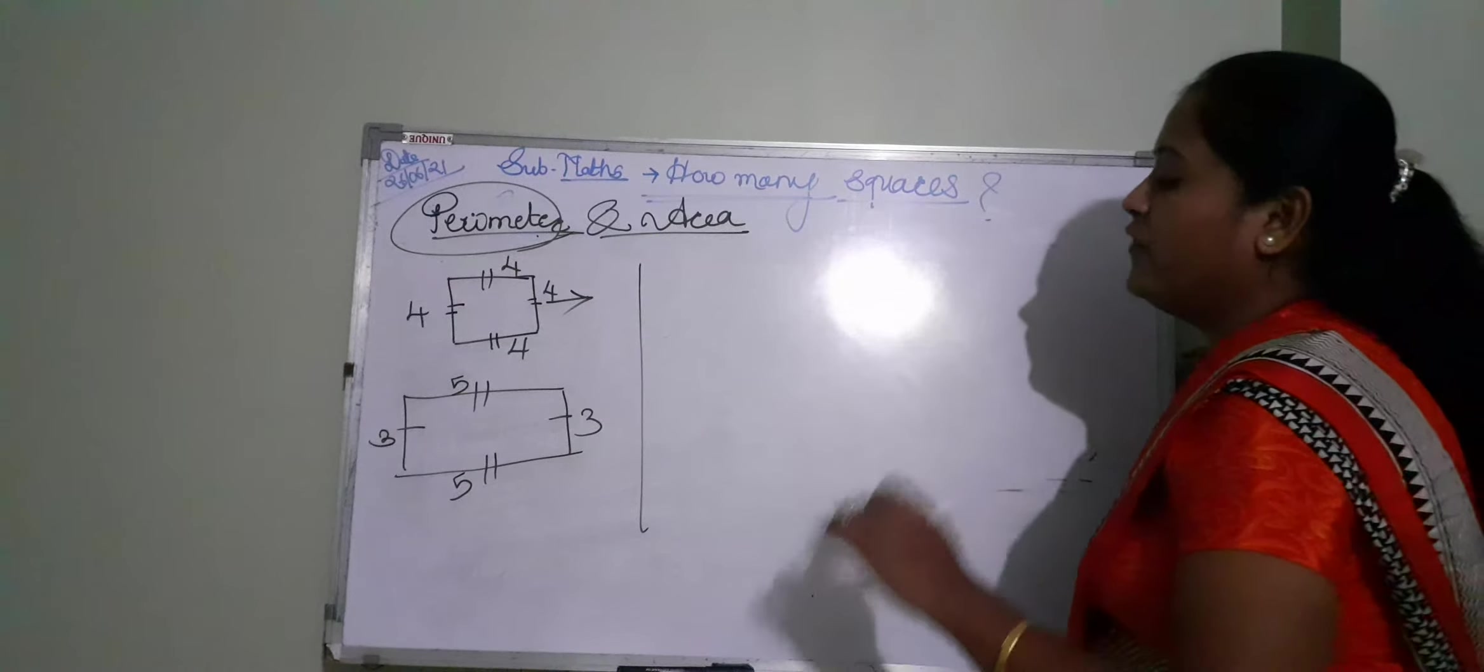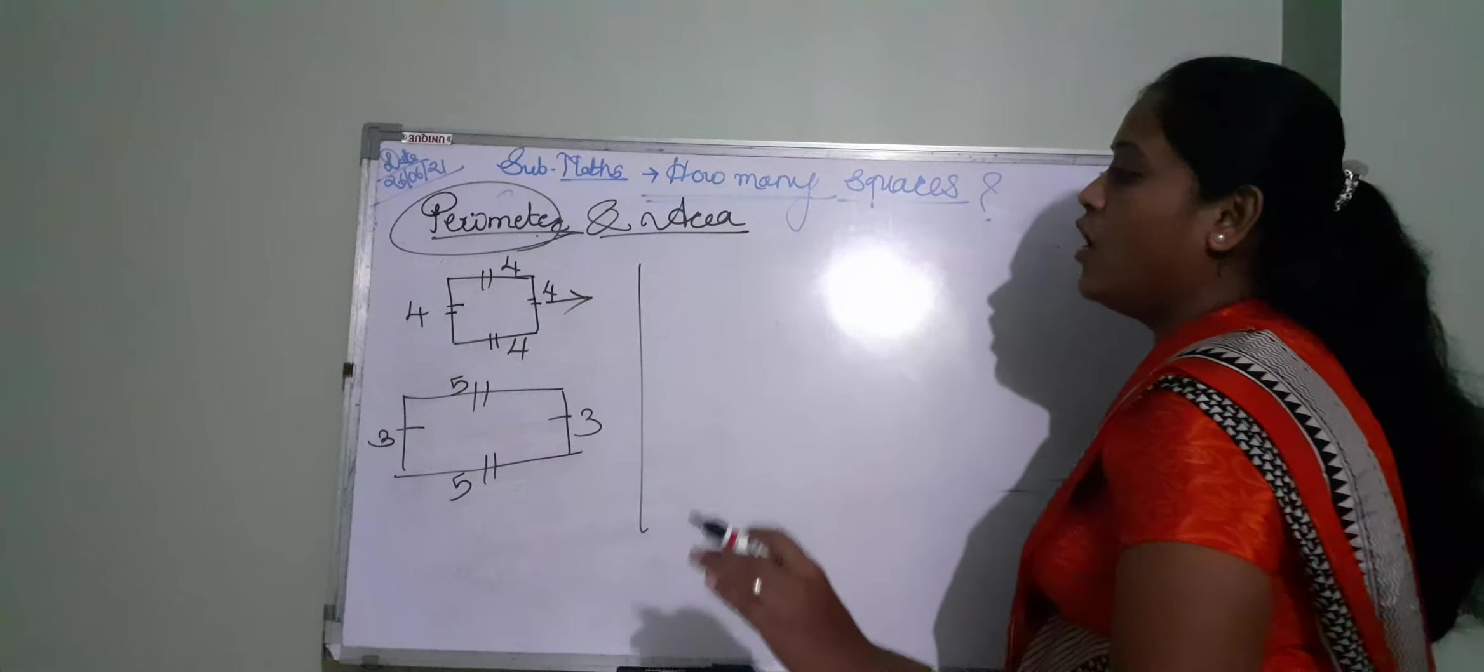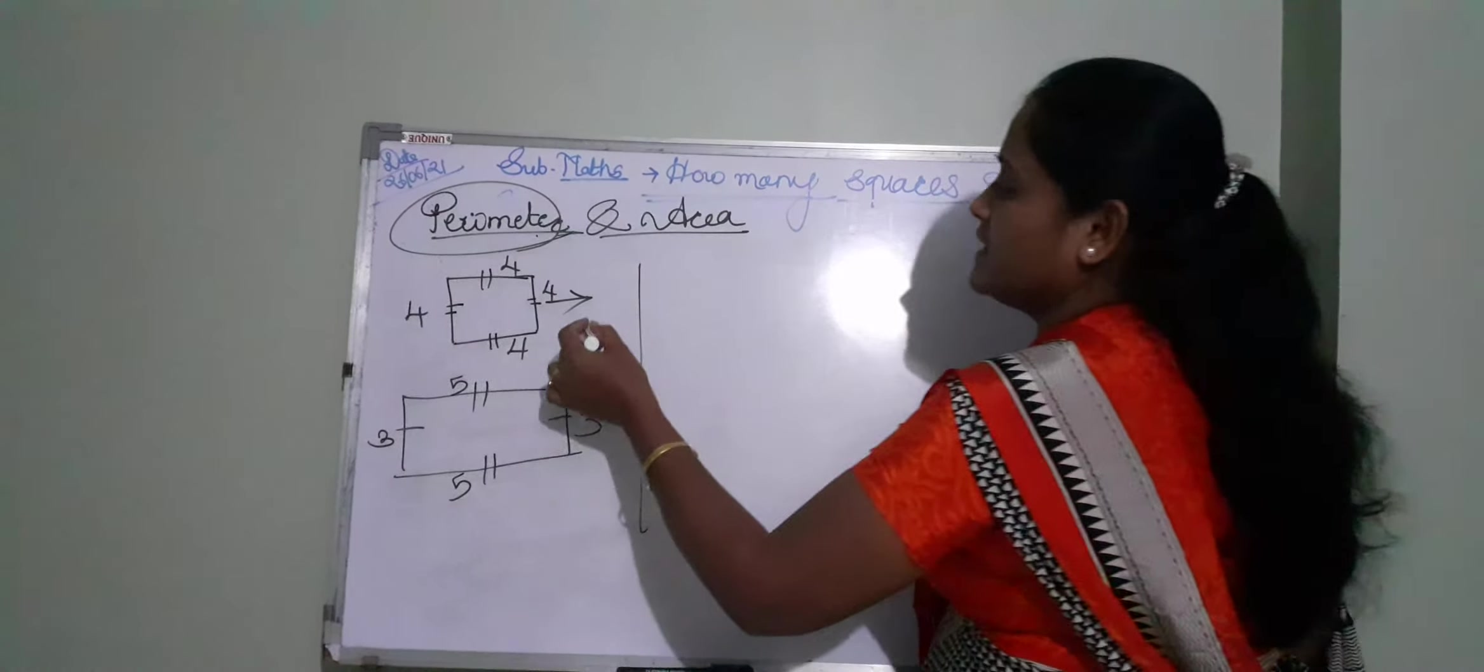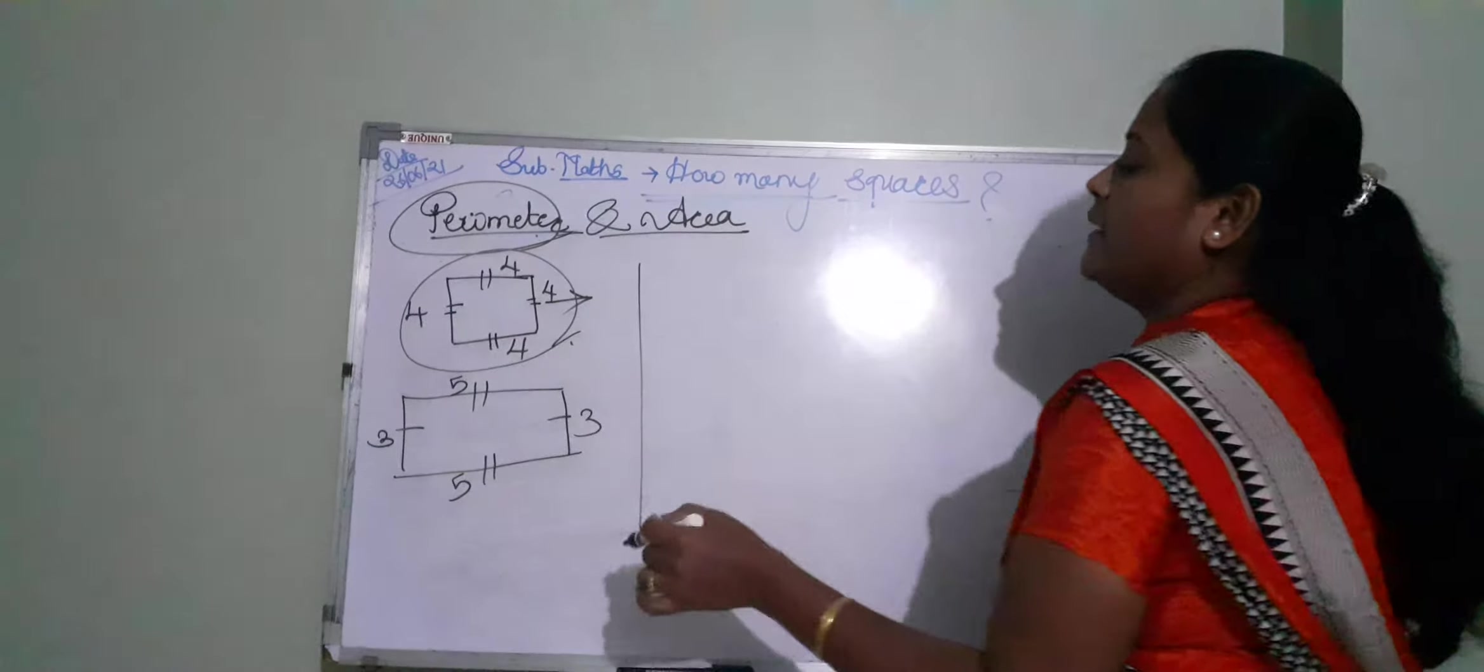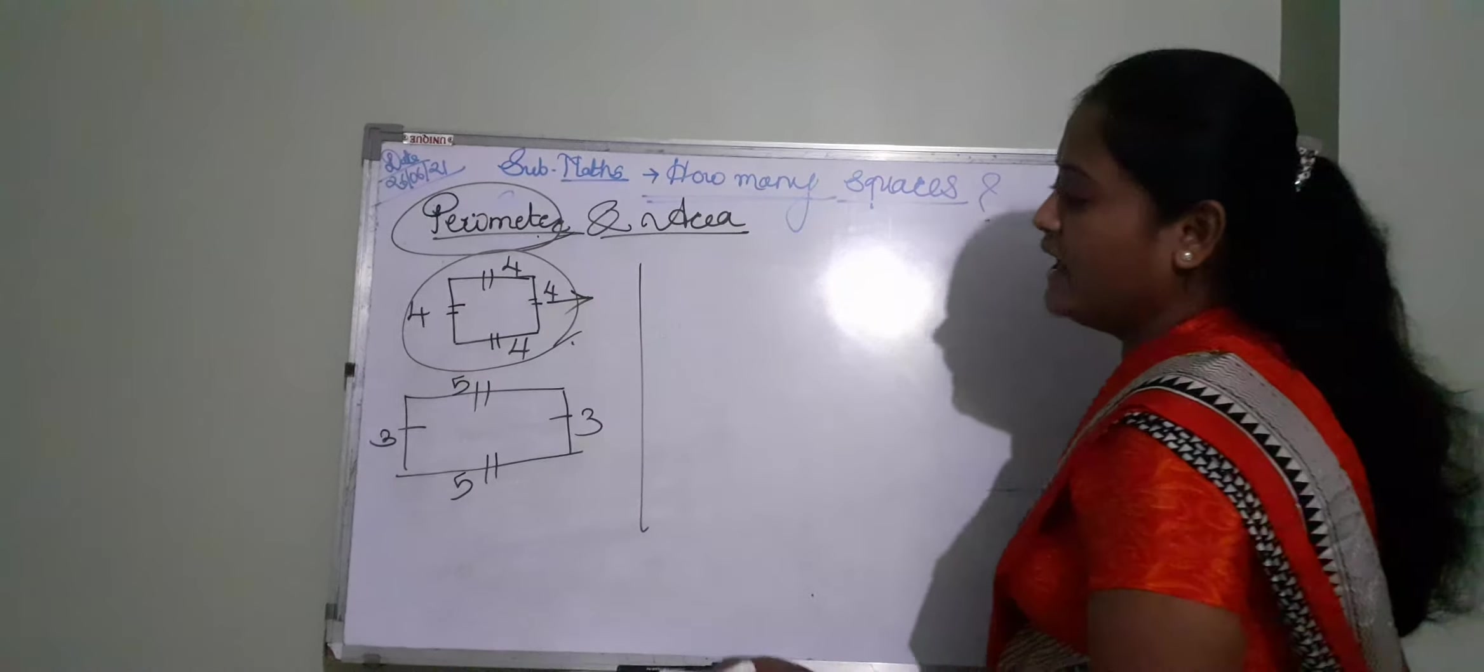Whenever you find the perimeter of a given figure, you just add the sum of all sides of that figure. Sum of all sides of figure, that means perimeter of that figure, perimeter of that shape.